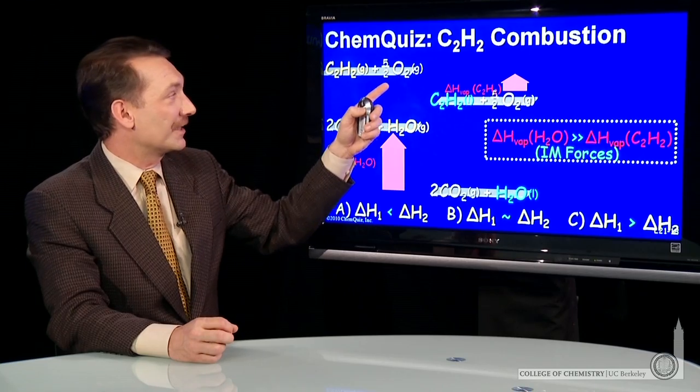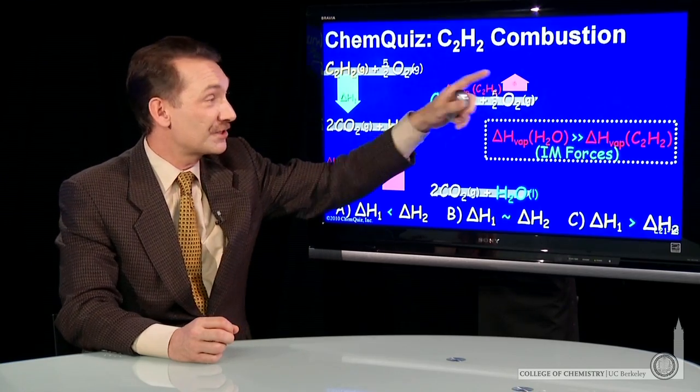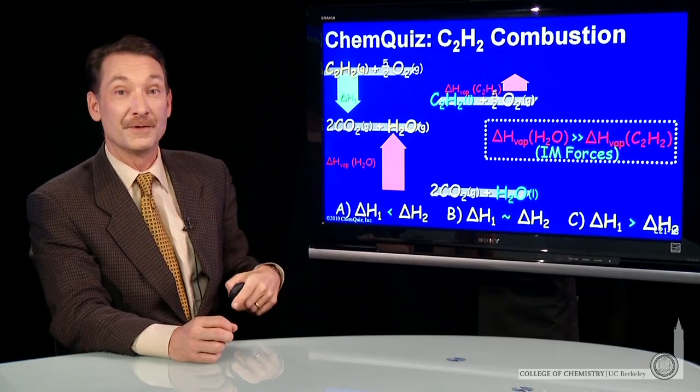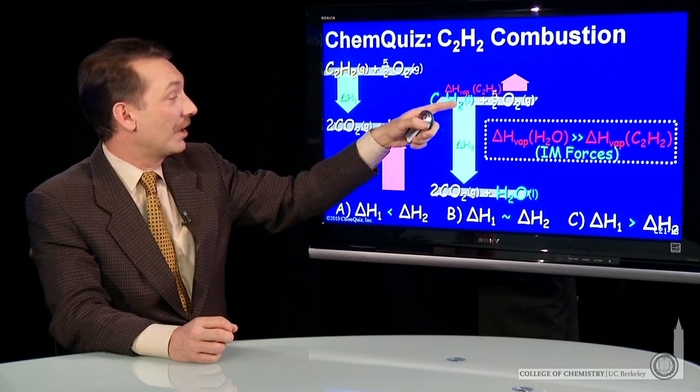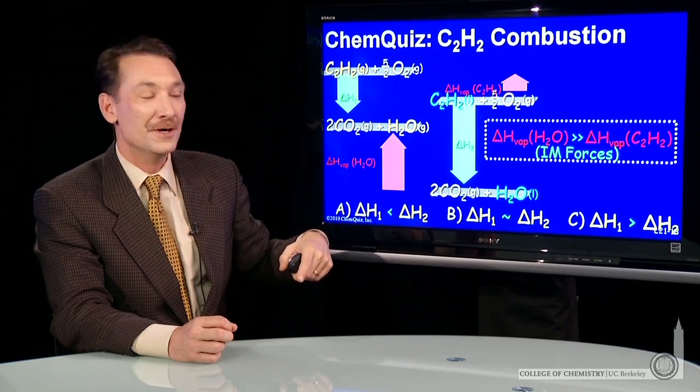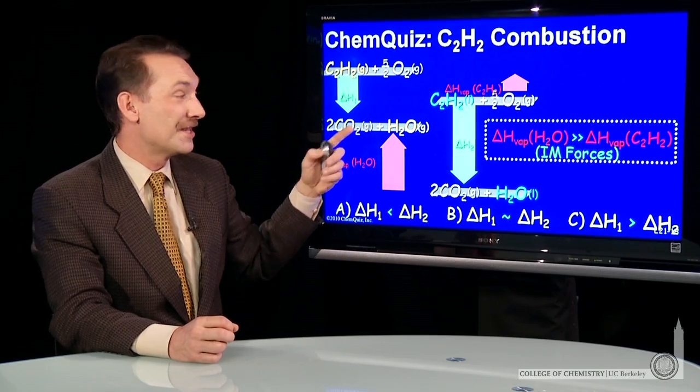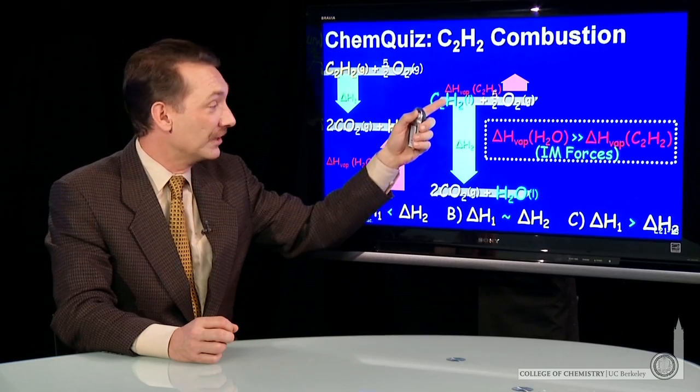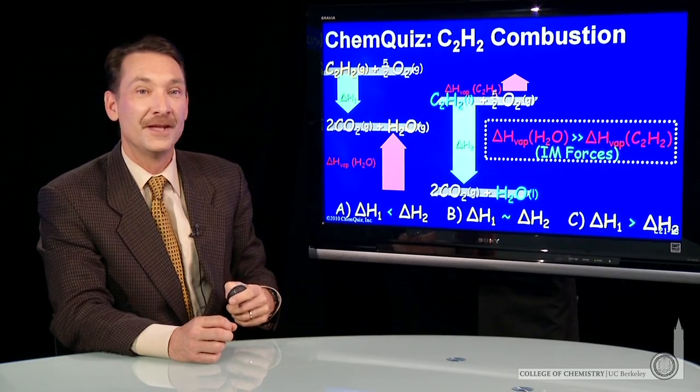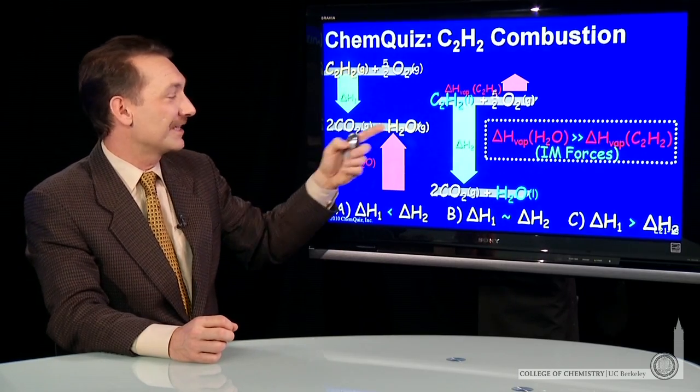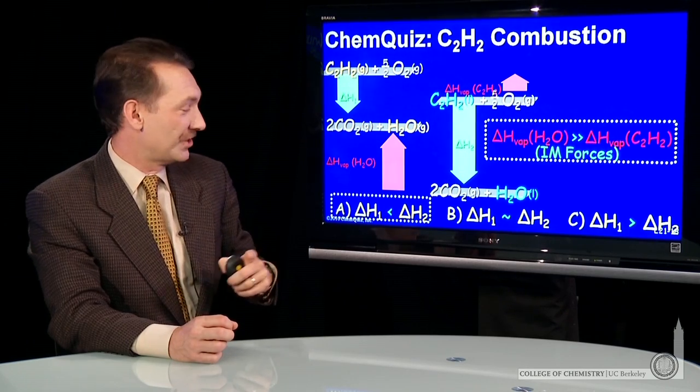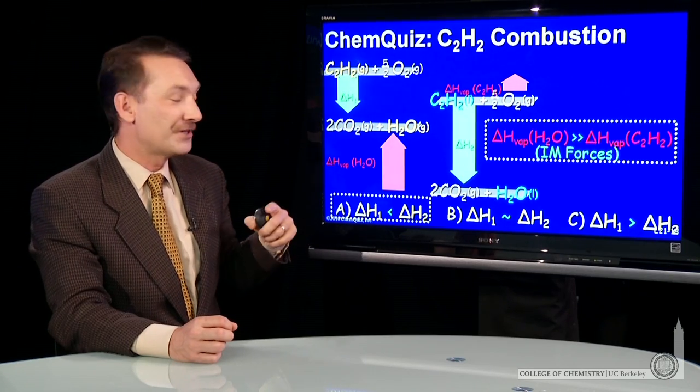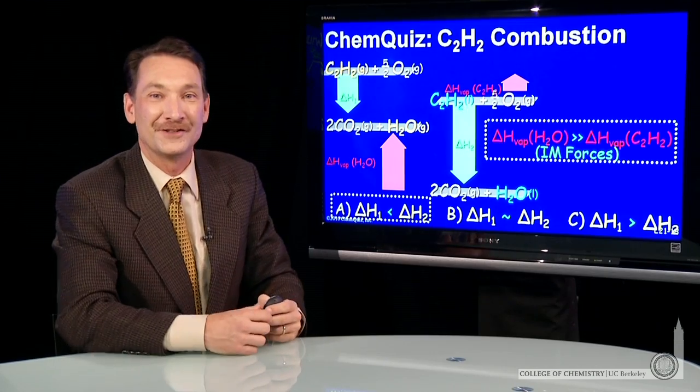So now I can compare easily. If this is a small enthalpy and this is a large enthalpy, then I can say, well, this enthalpy change, delta H2, is going to be larger than this enthalpy change, burning the gas to form the gas or the liquid to form the liquid. So burning from gas to gas is the lower enthalpy change. The correct answer here, delta H1 is smaller than delta H2.